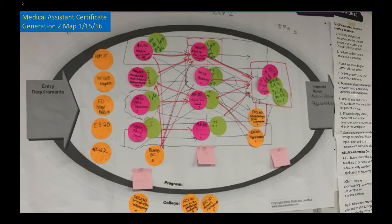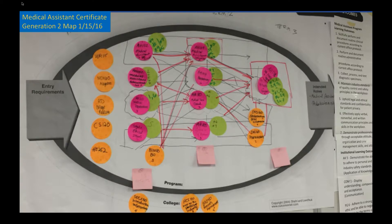This is what we call a second-generation map — what it looks like at the end of a mapping session, or actually after two sessions. In that first session, faculty get it all down and draw lines showing the connections between courses. They also identify where they think the program learning outcomes are addressed and assessed. In this version of the map, there were lots of places where those assessment points were identified. It's messy and it's intentional — it's meant to be messy. It starts an ongoing conversation about where and how to assess the program learning outcomes.